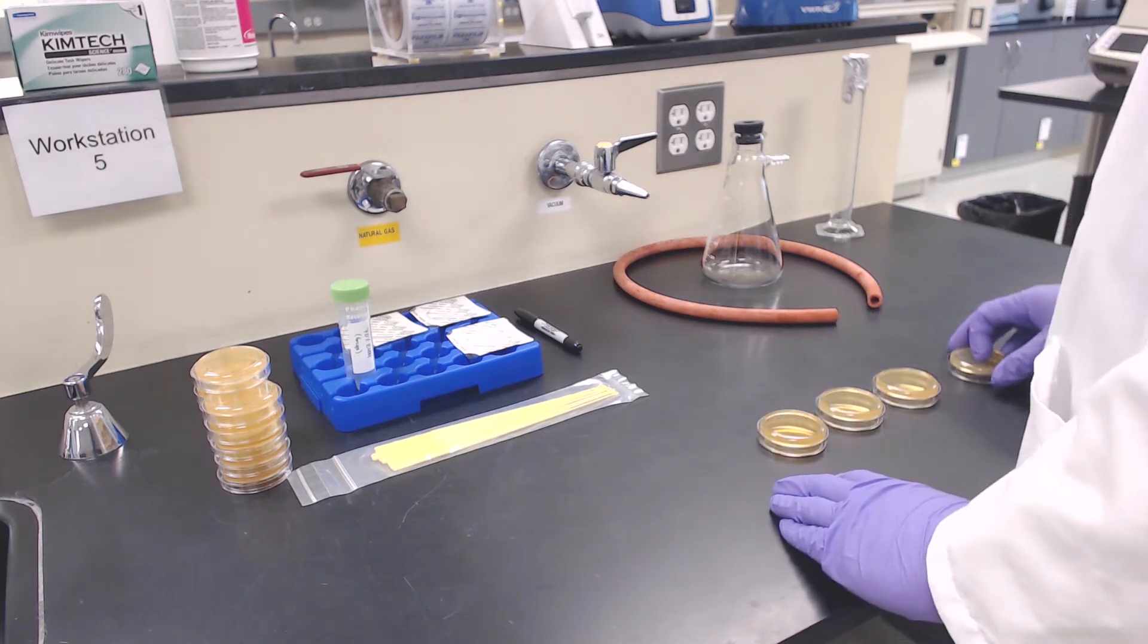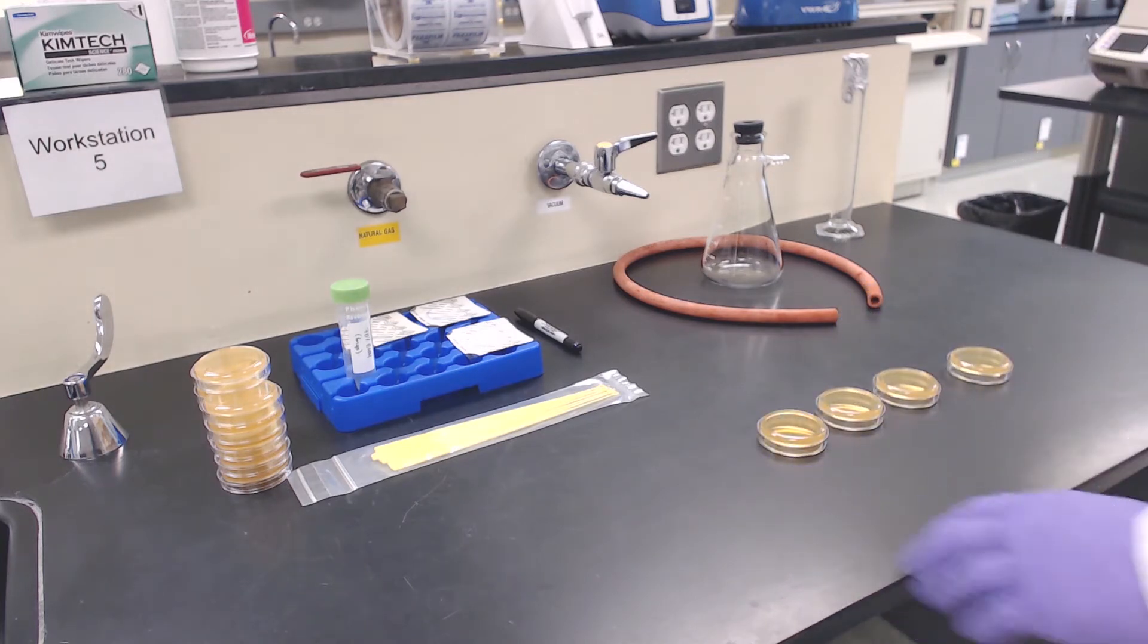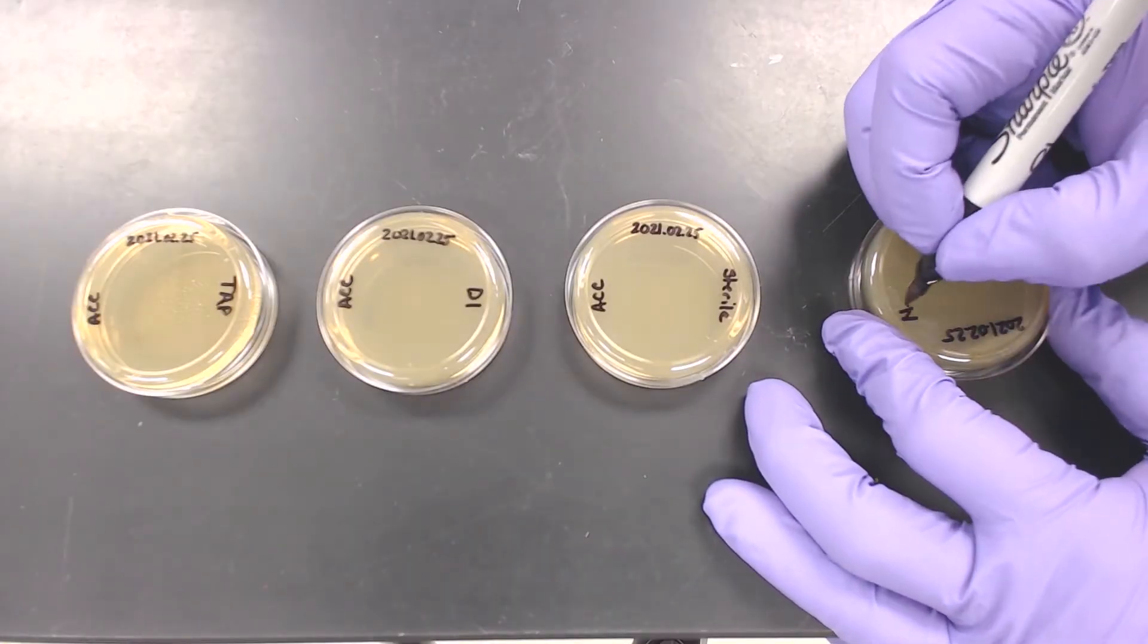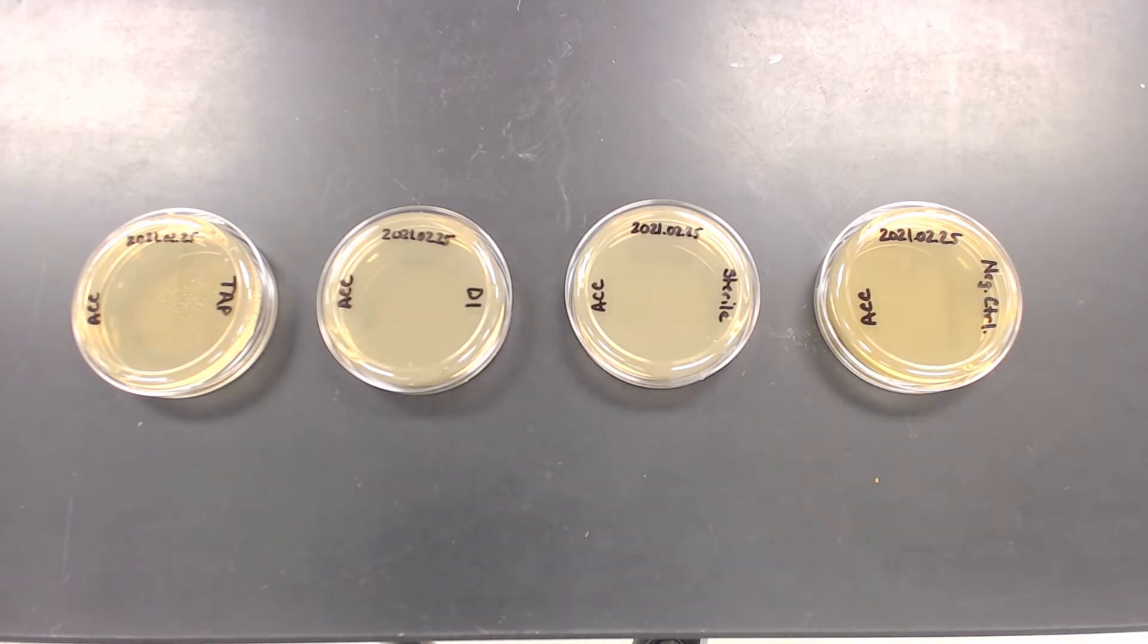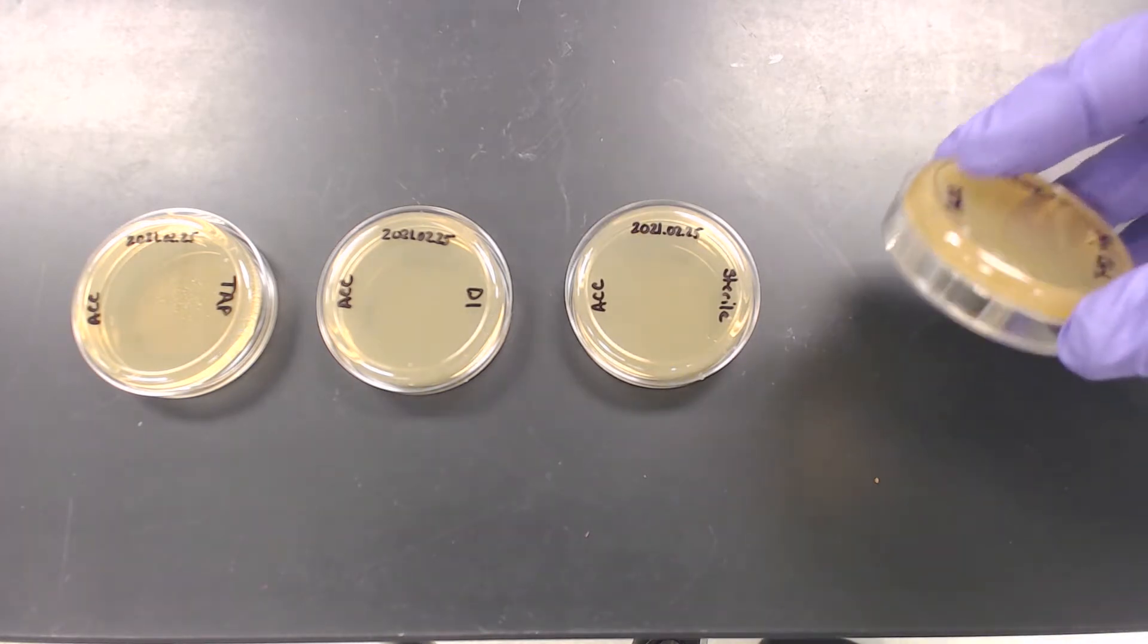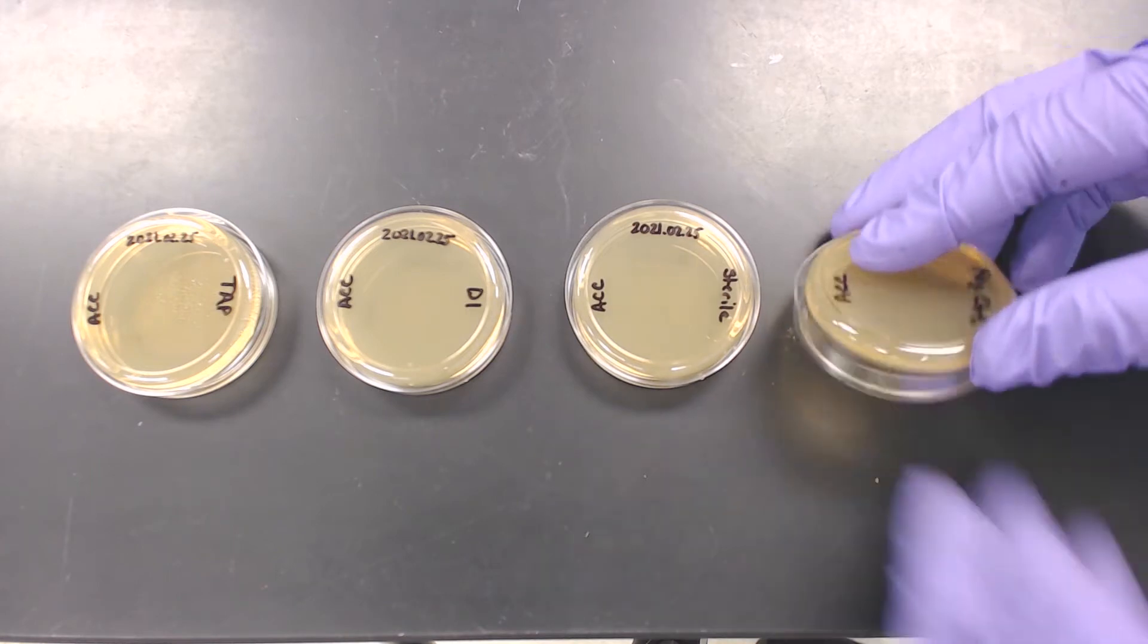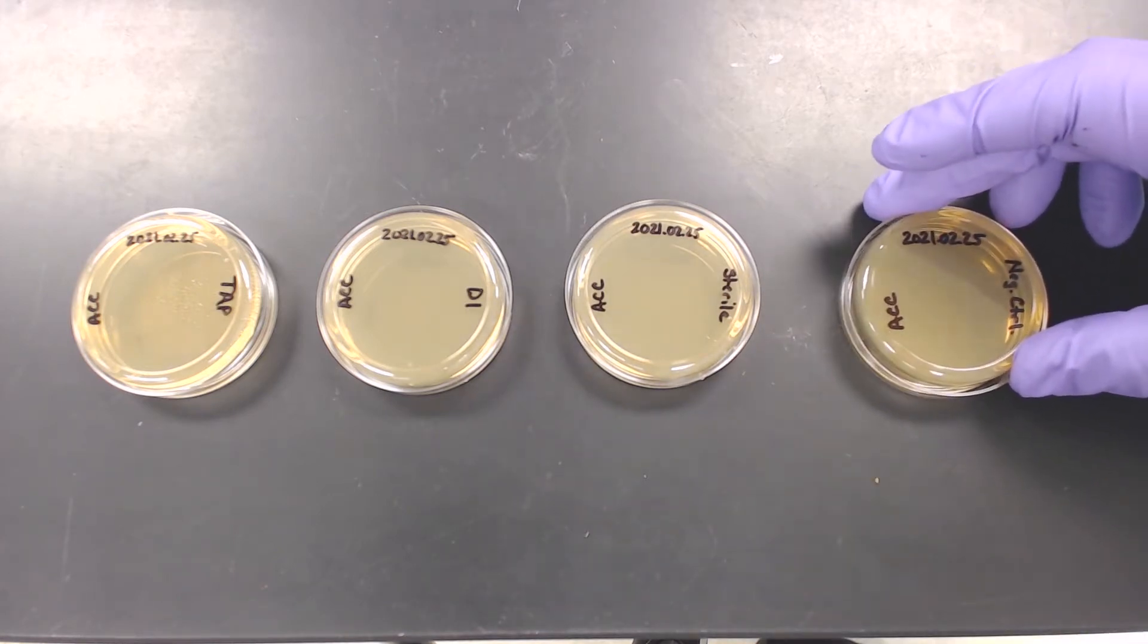Part 1: Begin by obtaining 4 plates, one for each of the 3 water samples and the 4th plate for a control. Label the plate with your initials, the date, and corresponding sample name. Ensure the label is made on the half of the petri dish containing the agar. Do not label the lid, as it could become separated from its agar plate.